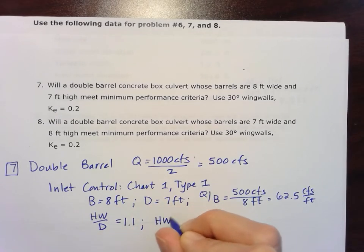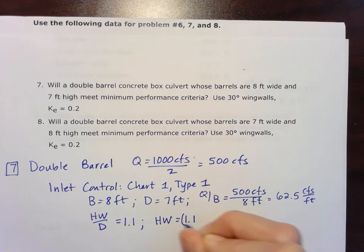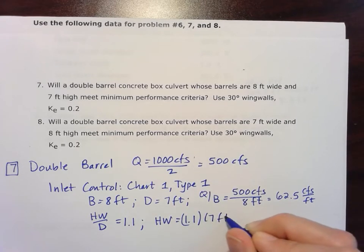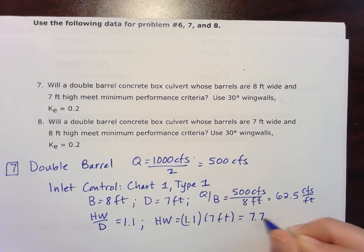So we'll take that HW over D and set that equal to 1.1, reading it off the chart. And now that allows us to solve for the headwater. We take that 1.1, multiply it by that dimension D, which in this case is 7 feet. And so our headwater is 7.7 feet for our inlet control.